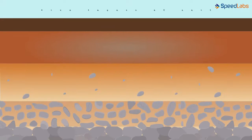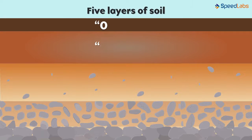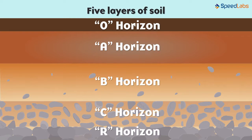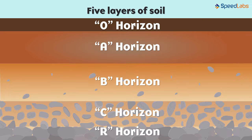In the previous video, we looked at the soil profile and the various layers present in it. Does the cross-sectional view of the soil layers look somewhat like this? Yes, it does! Let us look at each layer, that is, each horizon in detail in this video.